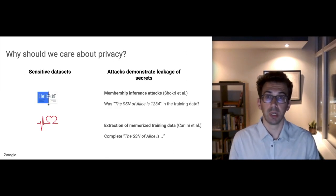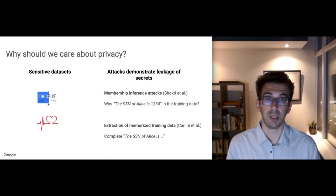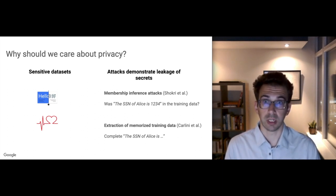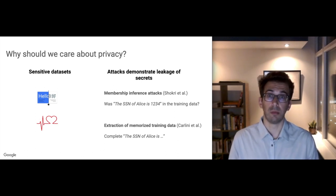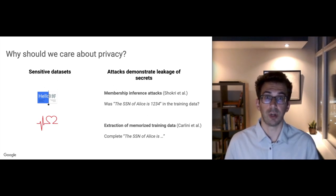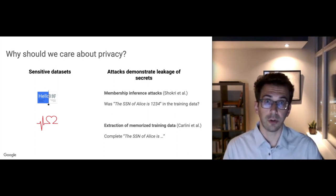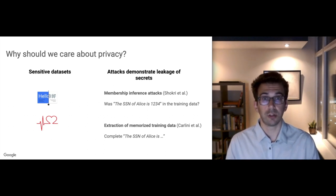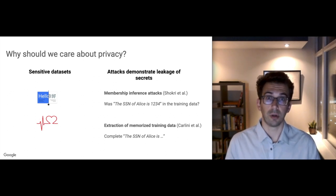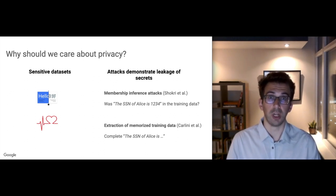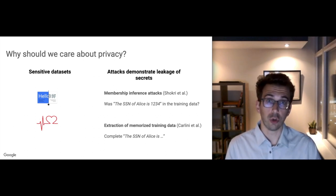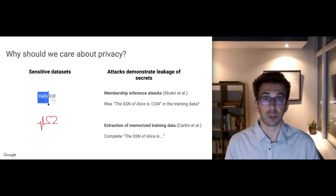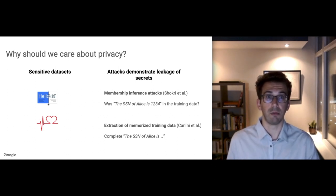So why should we care about privacy? We all know that machine learning is being usefully applied to the analysis of sensitive datasets. This includes data in healthcare but also when building language models over private correspondence. We also know from research that attacks have demonstrated leakage of secrets. A first example is membership inference. An adversary able to observe a model's predictions can infer whether a particular piece of training data was included to train a model or not. In another example, if we insert very unusual sequences of text in a language model's training set, then we can feed the resulting model with the beginning of the sequence and recover the rest of the sequence.